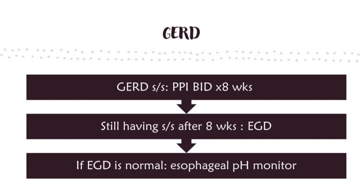GERD, or acid reflux — in layman's terms, heartburn — is chronic or frequently recurring epigastric pain, burning, or discomfort, and is one of the most common differentials for chest pain. Avoid using medical terms with patients; ask if they have heartburn or acid reflux. For GERD treatment: if they have symptoms, use PPI BID for eight weeks. If still symptomatic, perform upper endoscopy. If the upper endoscopy is normal, perform esophageal pH monitoring.